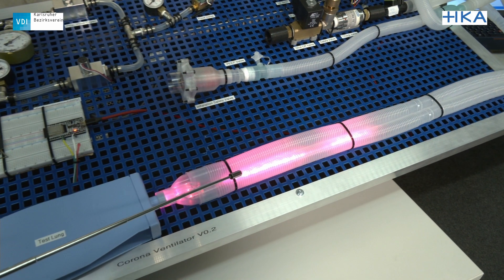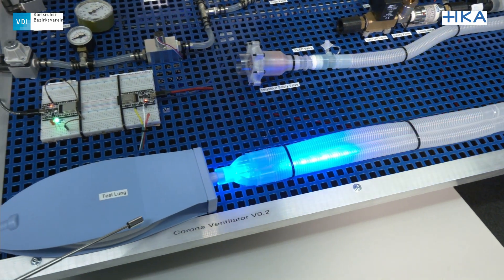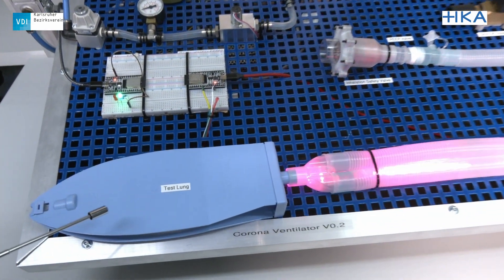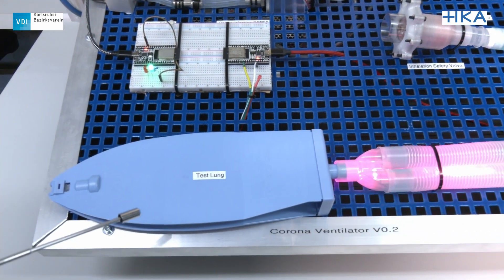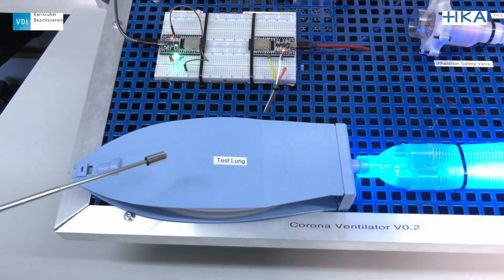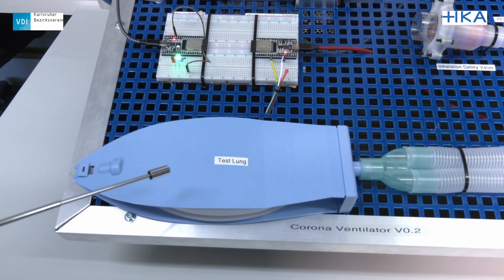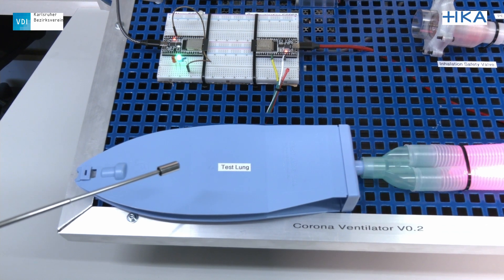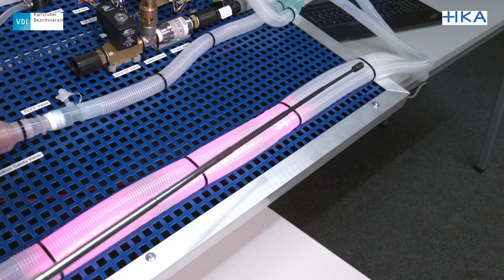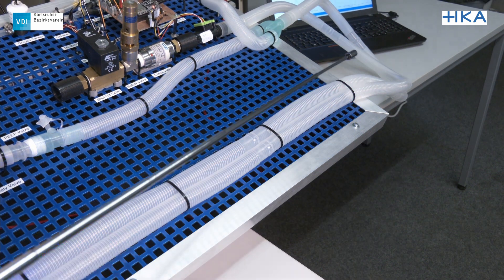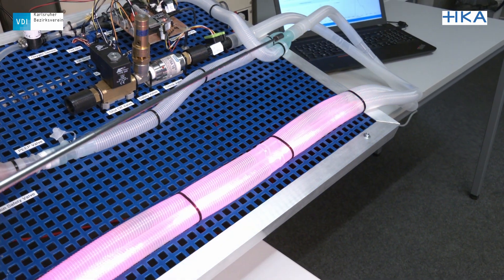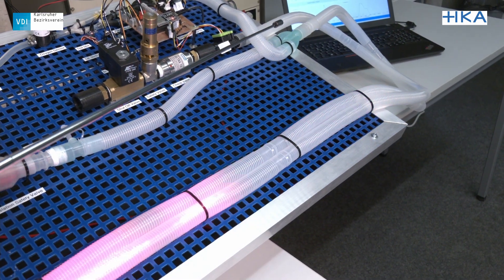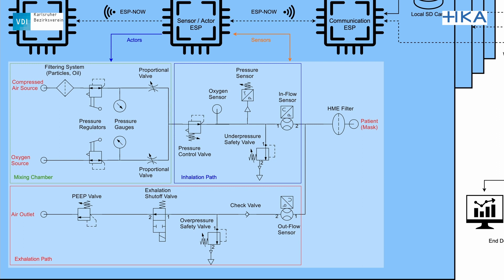The breathing air is then guided through the tubing package towards the lung. In our prototype, we use a test lung with one liter of dynamic volume and the compliance of an average adult. The exhaled air is passed through the second tube towards the exhaust valve, which opens fully on exhalation. The PEEP pressure is controlled by an ordinary PEEP valve and assisted by the pressure control loop.